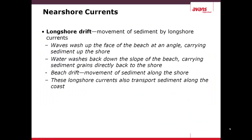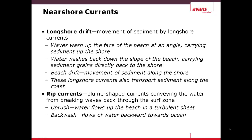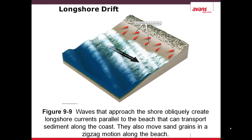Near shore currents include longshore drift, which is the movement of sediment by longshore currents, in which the wave washes onto the beach and carries the sediment back up the shore. And also beach drift, which is the sediment that moves along the shore. Rip currents are the currents going in and out of the beach, which can include the uprush — the flow of water onto the beach — and the backwash, the flow of water towards the ocean. As the waves approach the shore obliquely, it pushes the sand up and then back in a zigzag fashion, which transports the sediment along the coast.